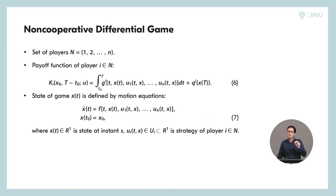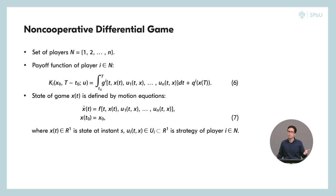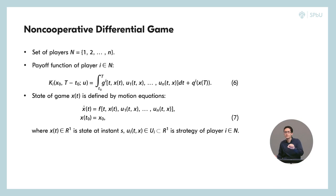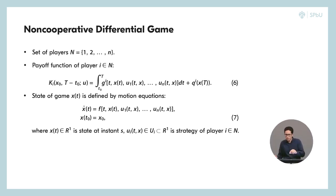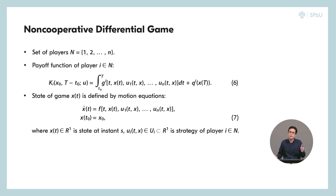In order to answer this question we need to define non-cooperative differential games. First, we define the set of players N = {1, 2, ..., n}. We define the payoff function of player i in the same way as the functional in our previous video, but here the functions j and q also depend on the player index, so they are different for each player. The state of the game is defined by a system of differential equations, where the right-hand side depends not on one control function u(t,x) but on the set of control functions or strategies of all players.